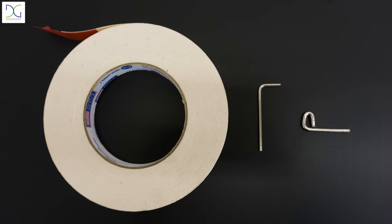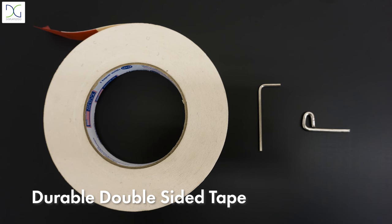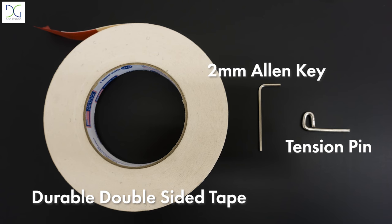First things first, you're going to need a few things before we get started. First, a roll of good, durable, double-sided tape. We use 3M, but you can use whatever you like. A 2mm Allen key and the tension pin from your original banner kit.